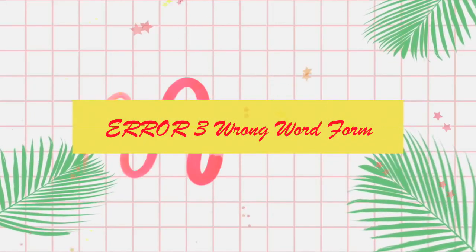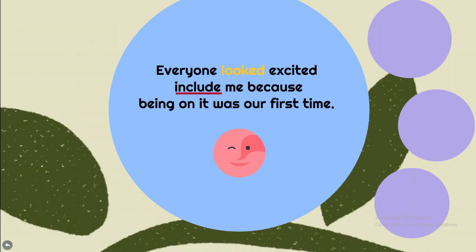Error 3: Wrong word form. Let's see the example together: 'Everyone looked excited include me, because being on it was our first time.' Notice in this sentence how to change the form of the word 'include.' In a sentence, there needs to be only one main verb, but in this sentence there are two main verbs.